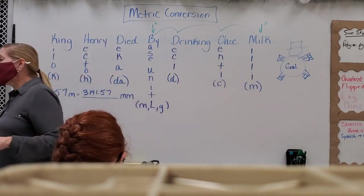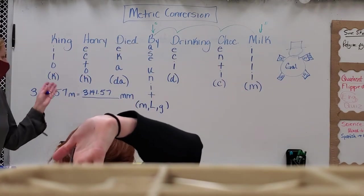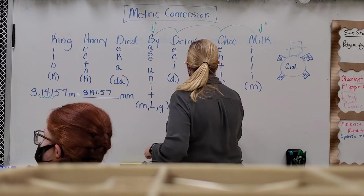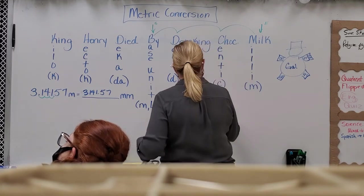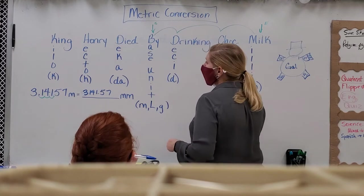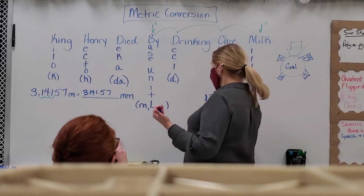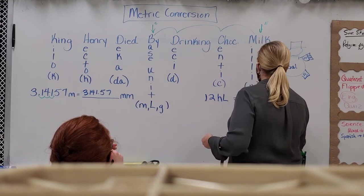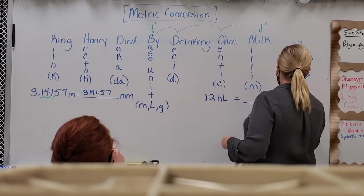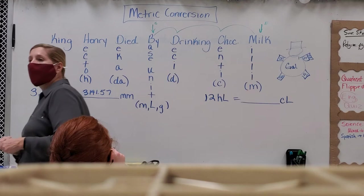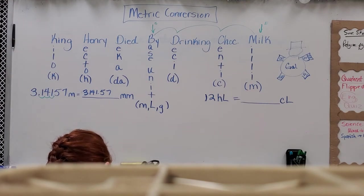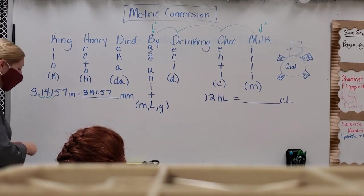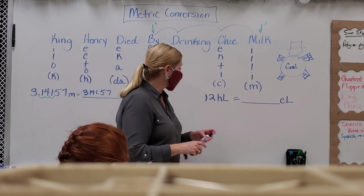Let's do another one. Give me a random number — 12. Let's do 12 hectoliters, because I never hear that one used. And let's convert that to centiliters. I don't have any base units this time — how do I know? Because there are two letters in both of them.